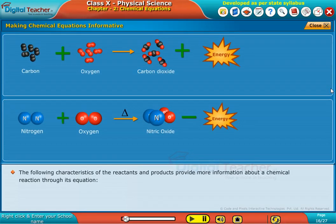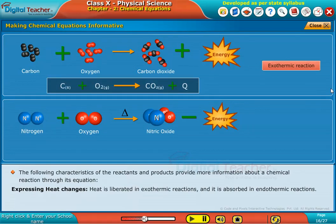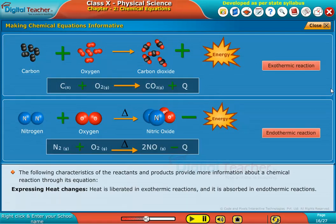The following characteristics of the reactants and products provide more information about a chemical reaction through its equation. Expressing heat changes. Heat is liberated in exothermic reactions and it is absorbed in endothermic reactions.